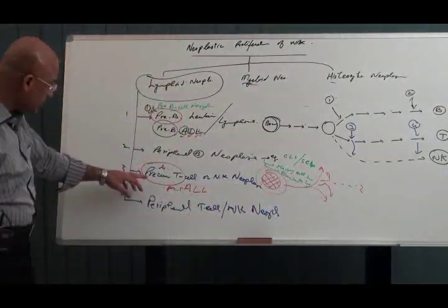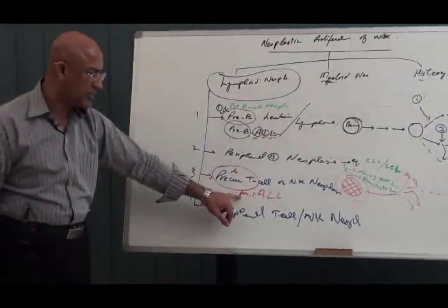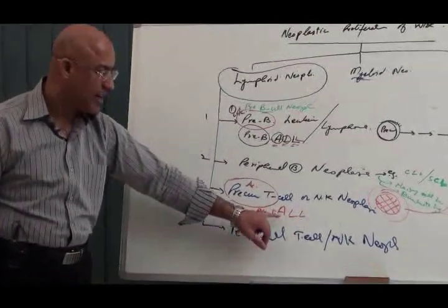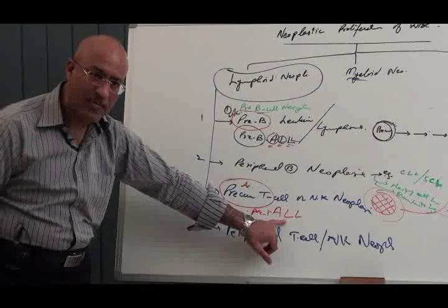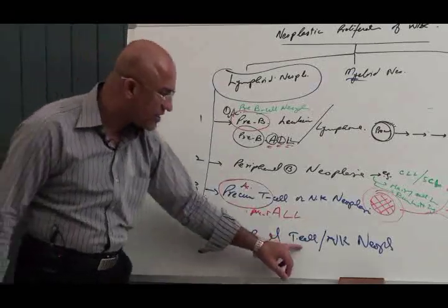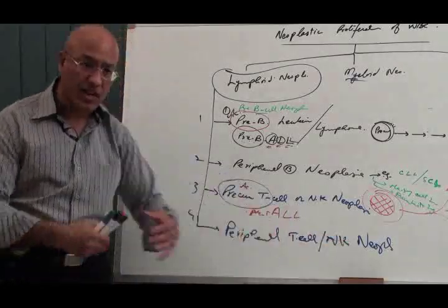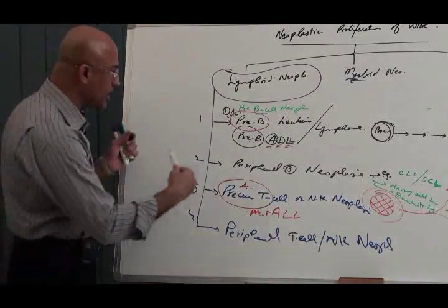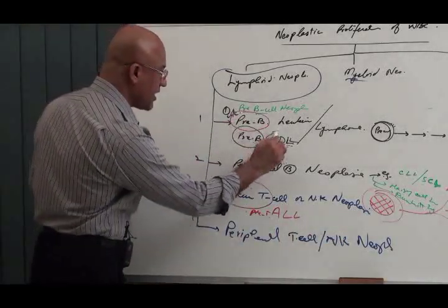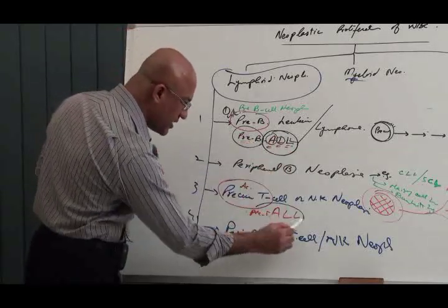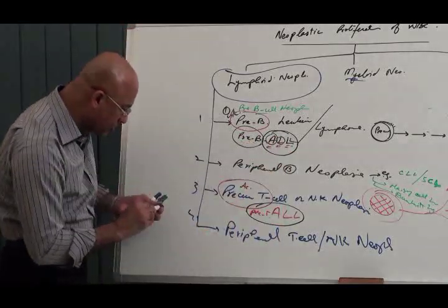Then precursor T cell - I have given you just one example: precursor T cell acute lymphoblastic leukemia. Now peripheral T cell tumors - there is a very large category in this also. We will discuss later because today's lecture is going to be in detail of pre-B ALL and pre-T ALL.